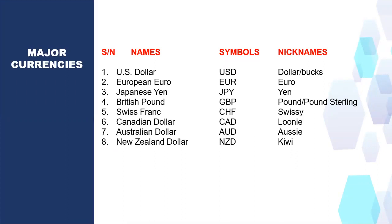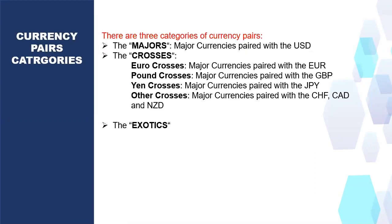Now we're going to go into the next topic: currency pair categories. There are three major categories of currency pairs. Number one is called the Majors.